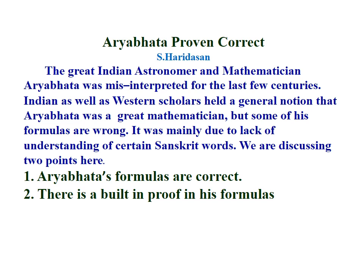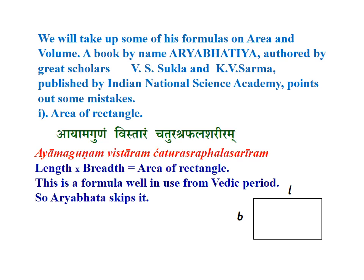The great Indian astronomer and mathematician Aryabhata was misinterpreted for the last few centuries. Indian as well as Western scholars held a general notion that Aryabhata was a great mathematician, but some of his formulas are wrong. This was mainly due to the lack of understanding of certain Sanskrit words. We are discussing two points: (1) Aryabhata's formulas are correct, and (2) there is a built-in proof in his formulas.